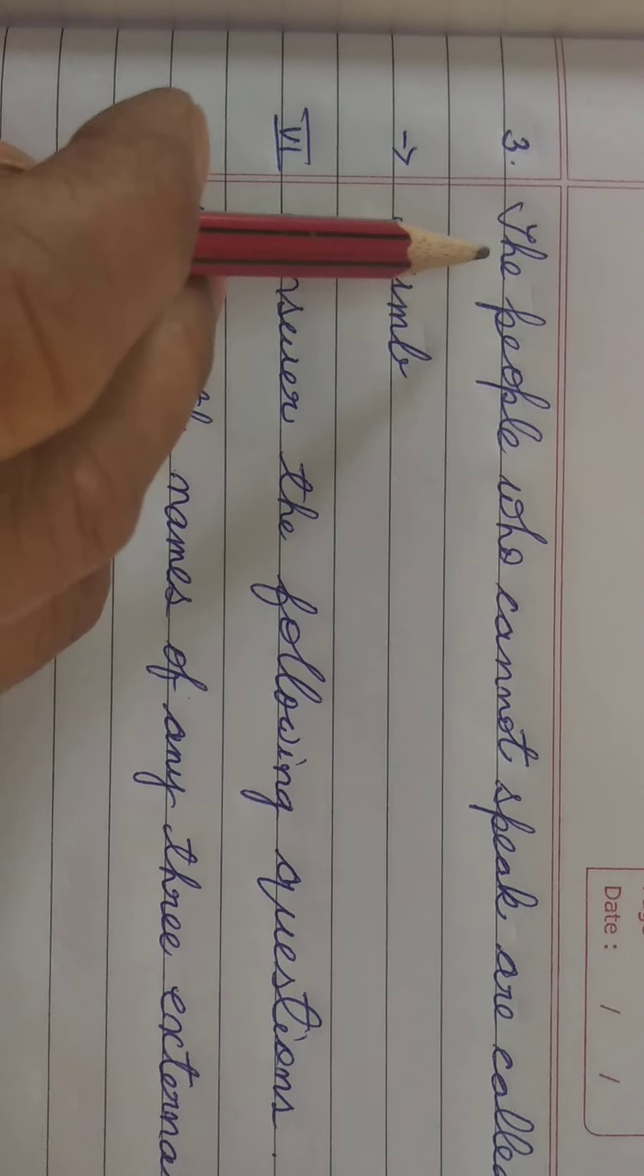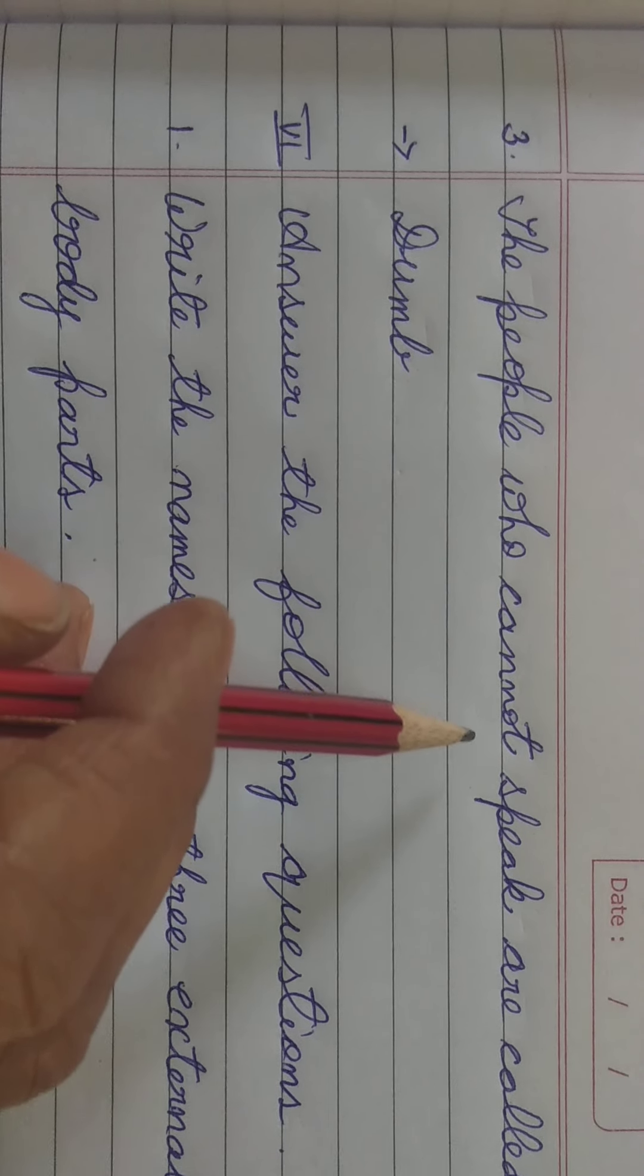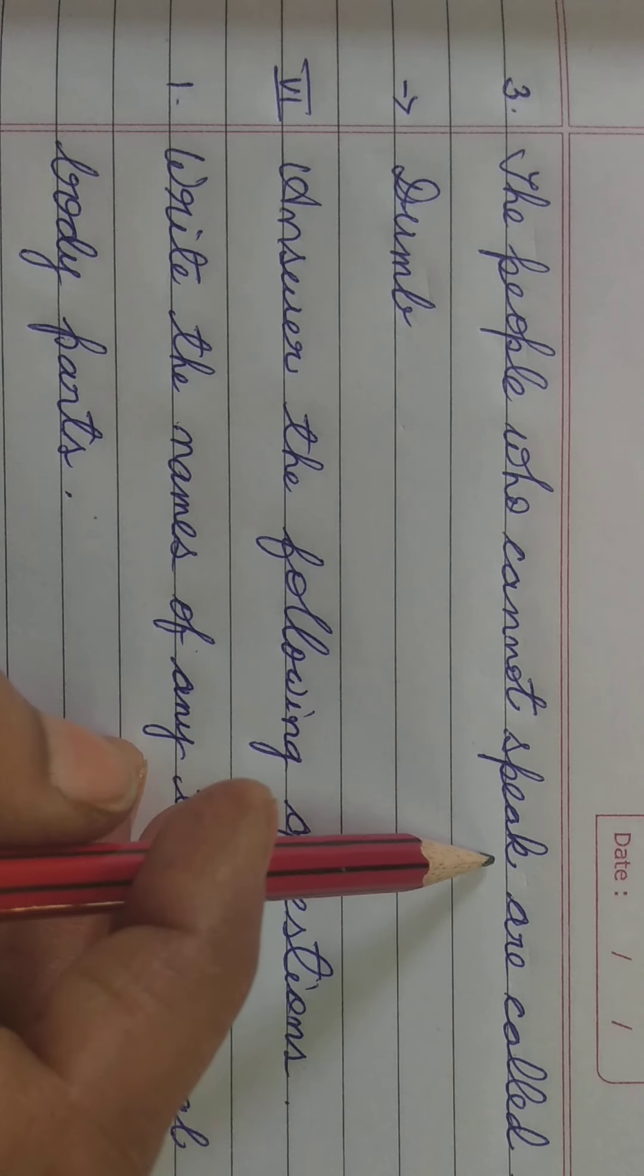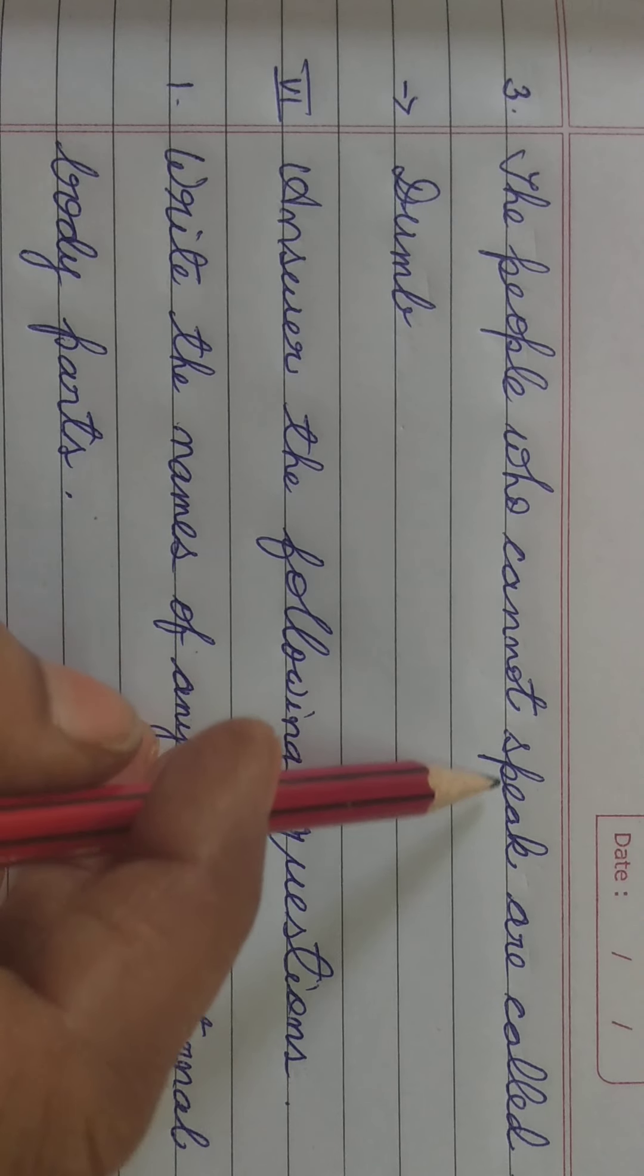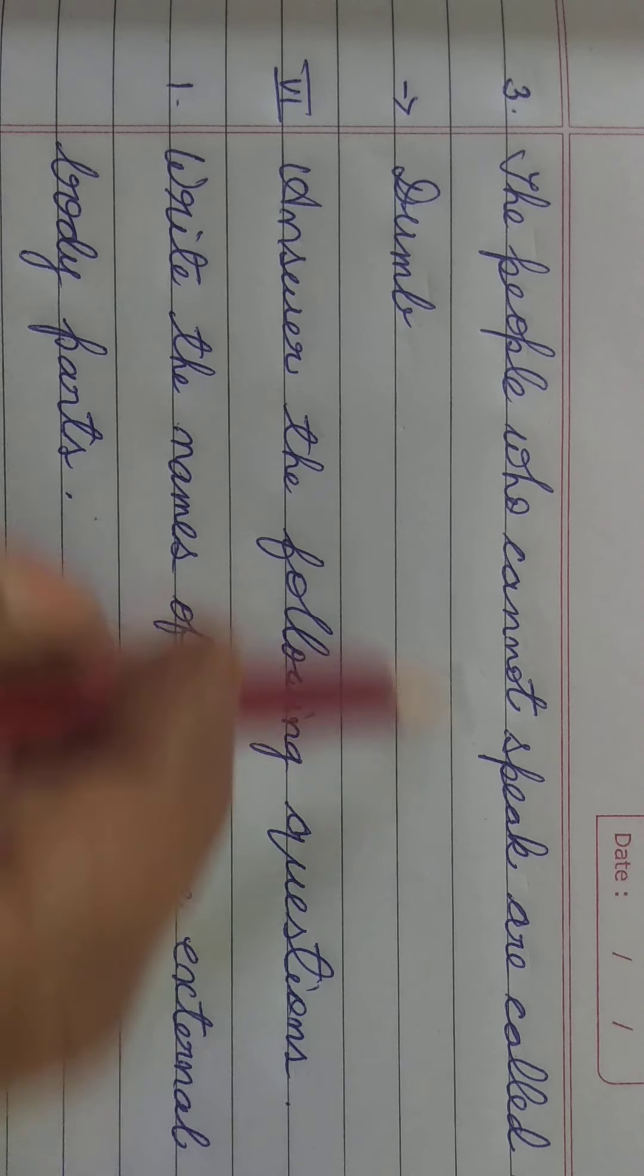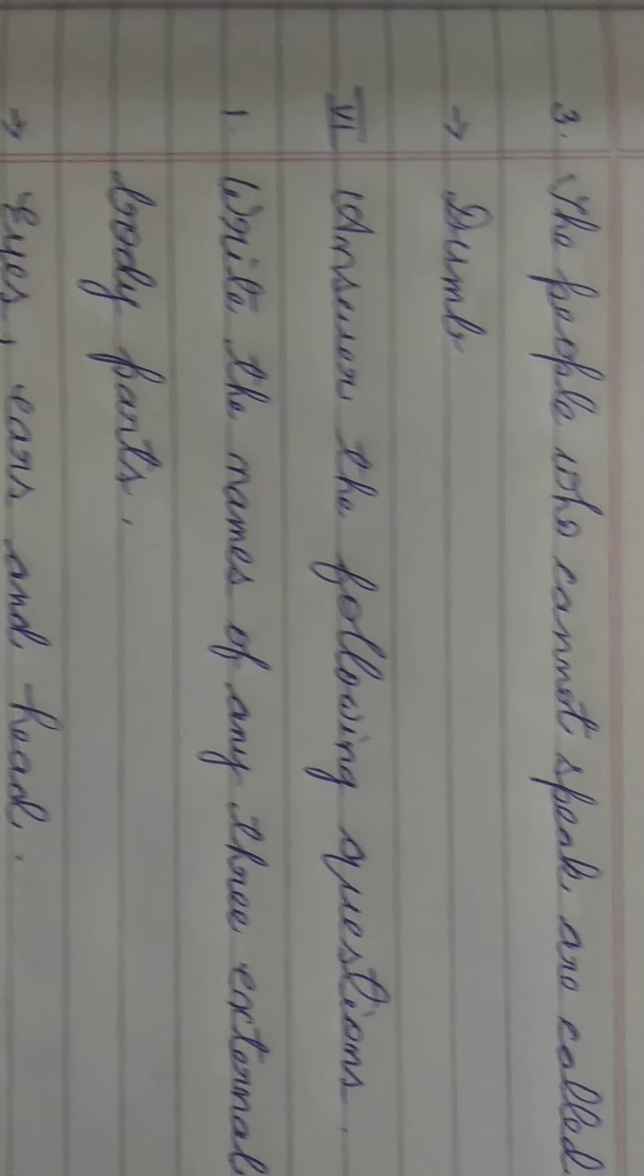Third one, the people who cannot speak are called. S-P-E-A-K speak means, cannot speak means nahi bol sakte hain. Jho people nahi bol sakte hain, unko D-U-M-B dumb kehte hain.